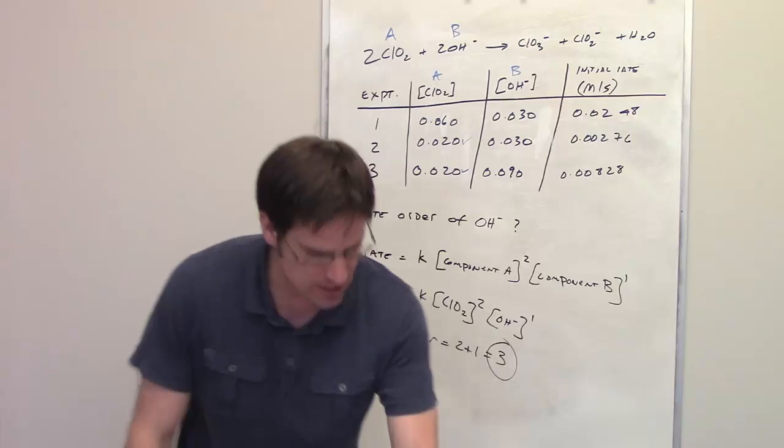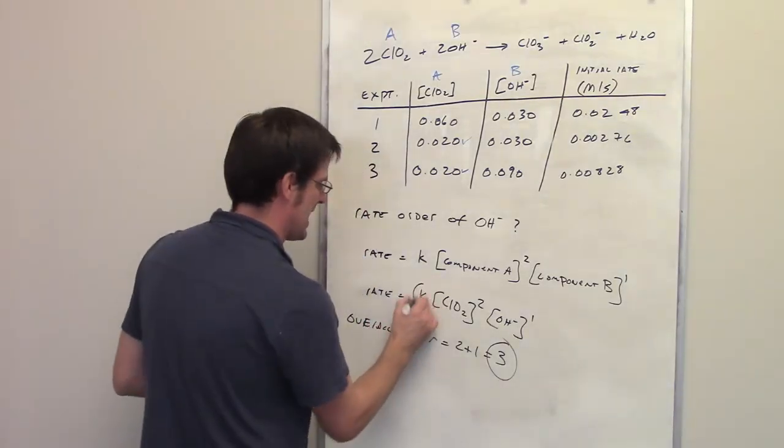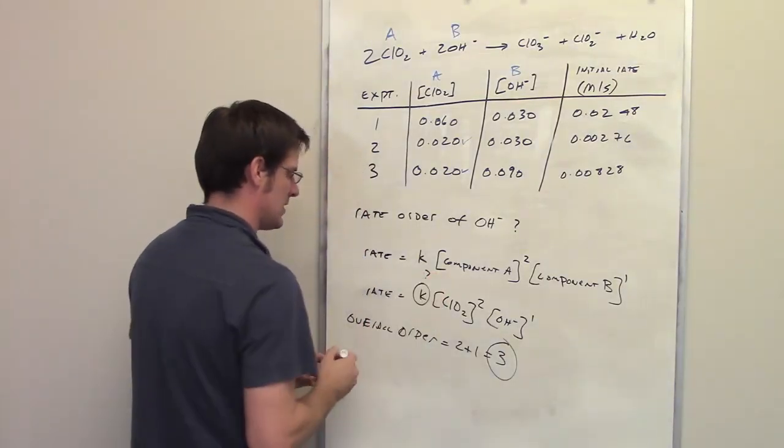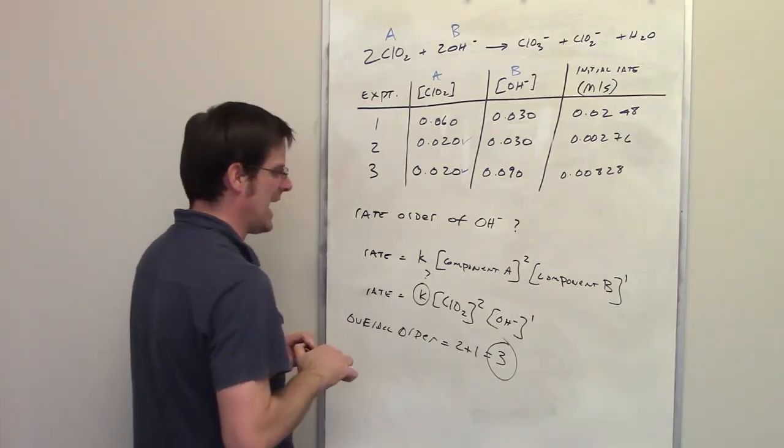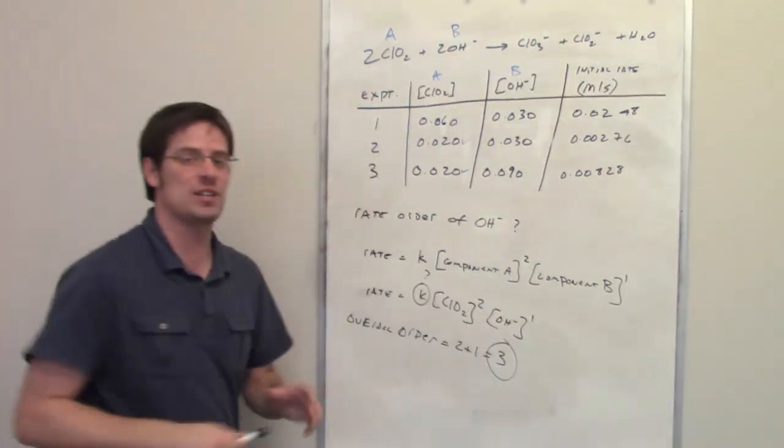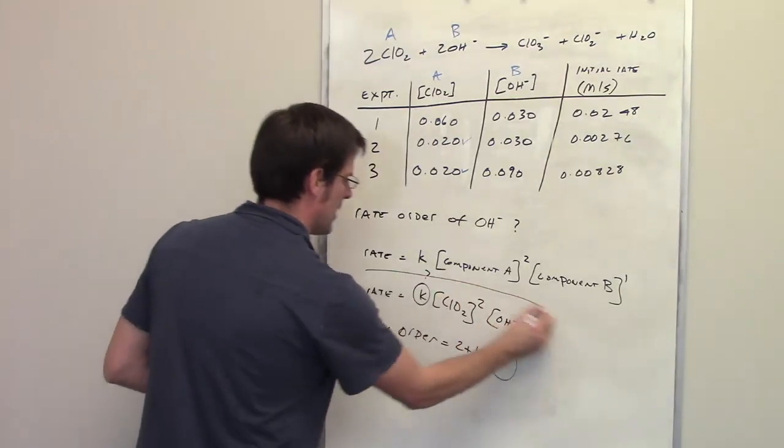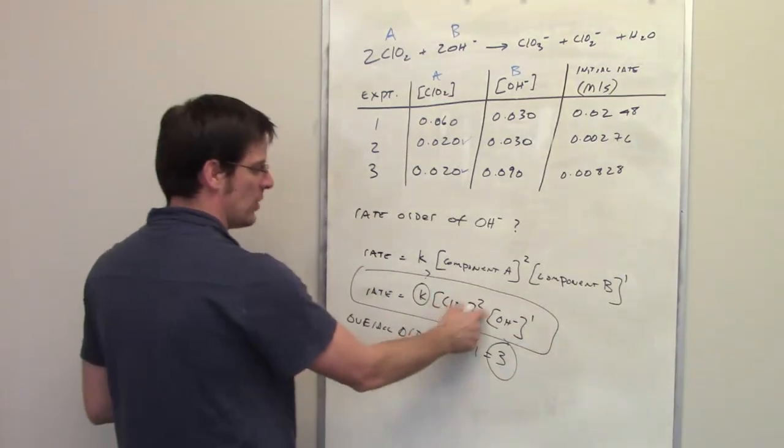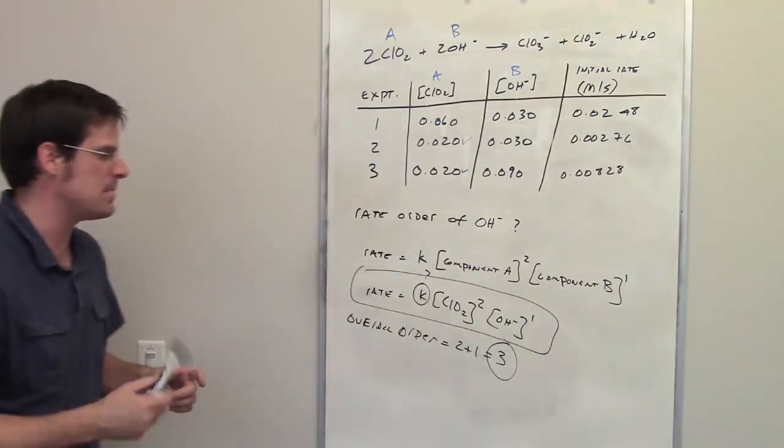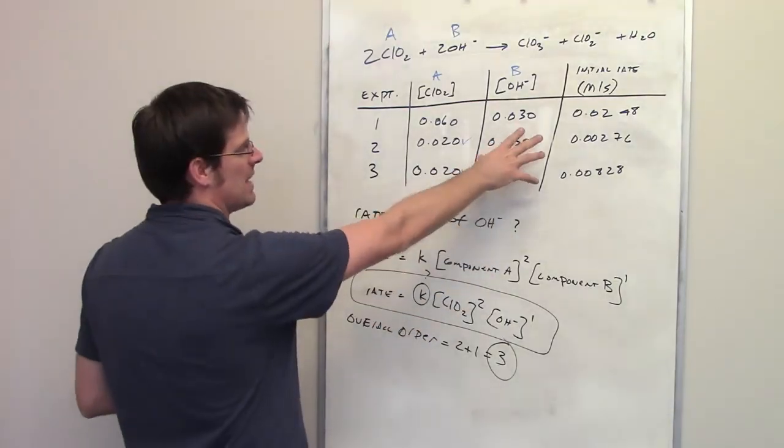In the next question, it asks us to figure out what K is. What is K? How do you figure out what K is? This actually is not as bad as you think it is. Once we've gotten to this point where we have a rate law written out, and we know the orders for each of the components A and B,